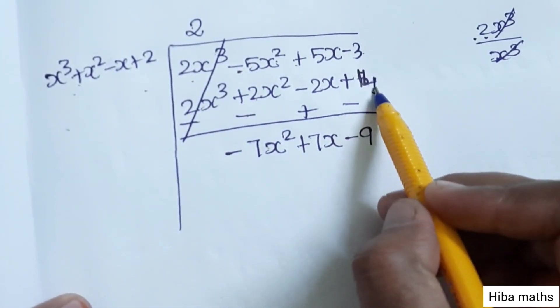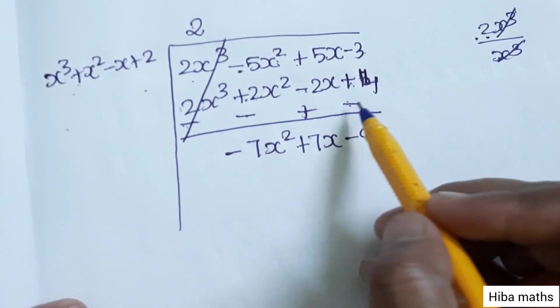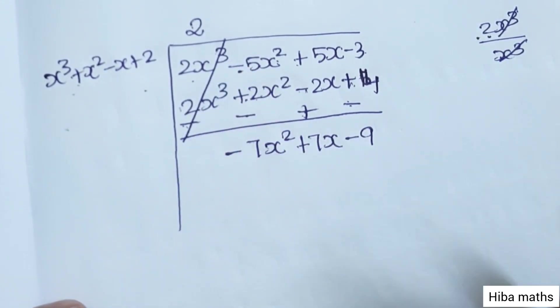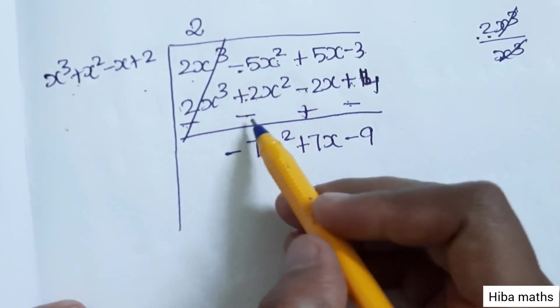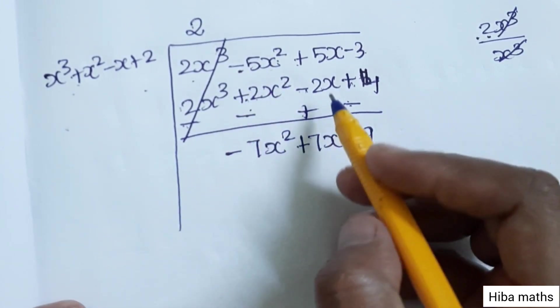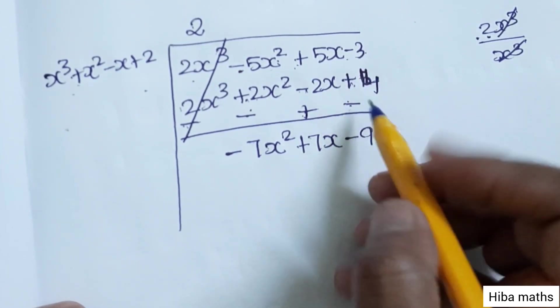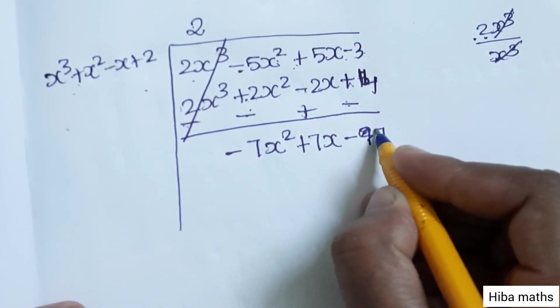Plus becomes minus, minus becomes plus, and the first terms cancel. Minus 5x² minus 2x² gives minus 7x². 5x plus 2x gives plus 7x. Minus 3 minus 4 gives minus 7.